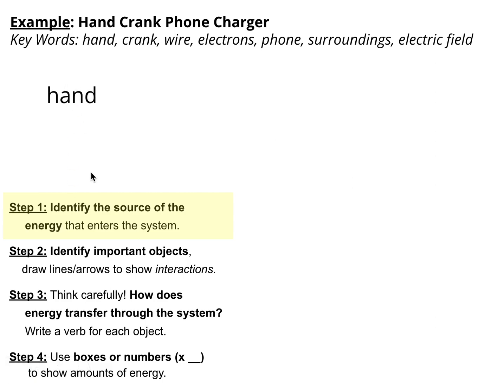Now step 2 involves identifying other important objects. And I did use these keywords up here as a clue, but I would be looking at the situation and thinking, okay, what is important here and what is connected to what? So I'm going to use lines to show interactions between objects.